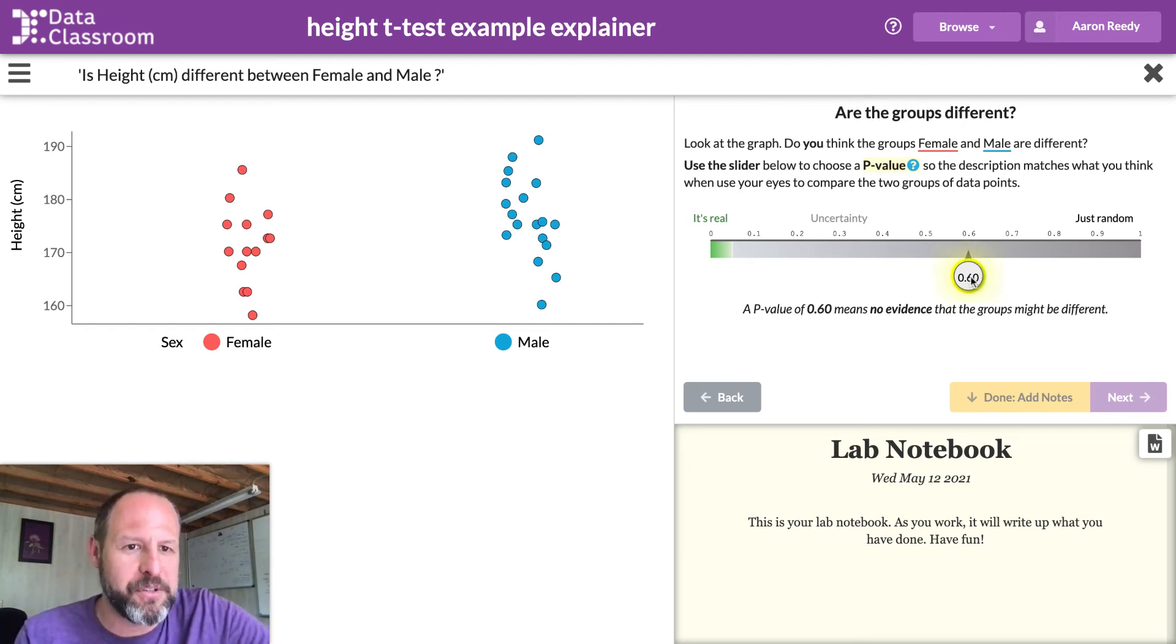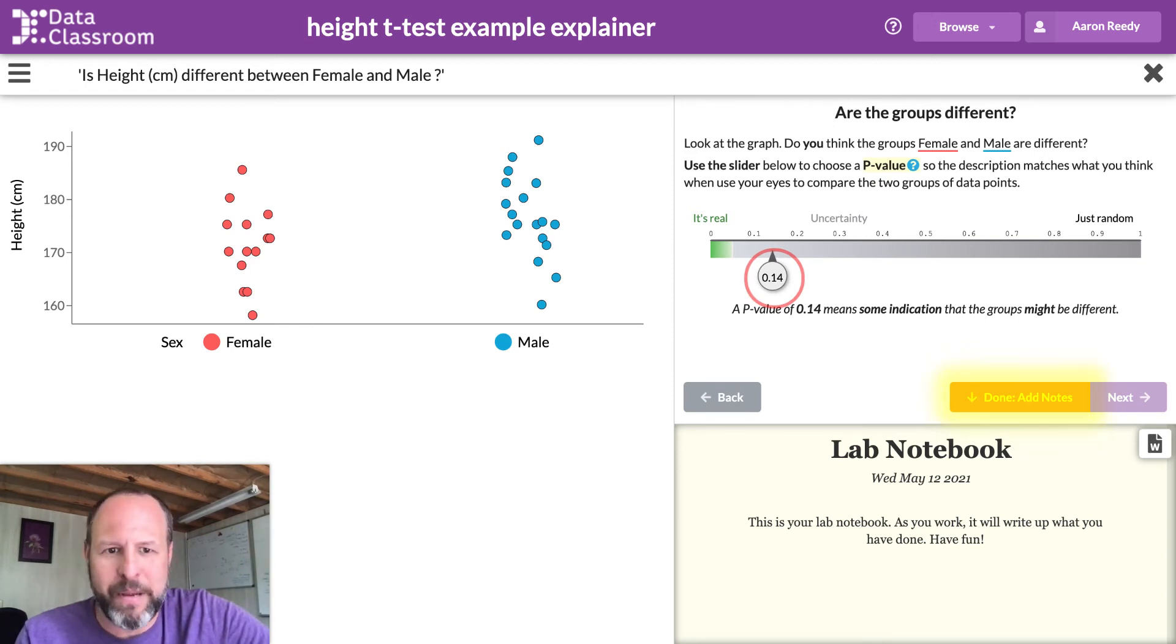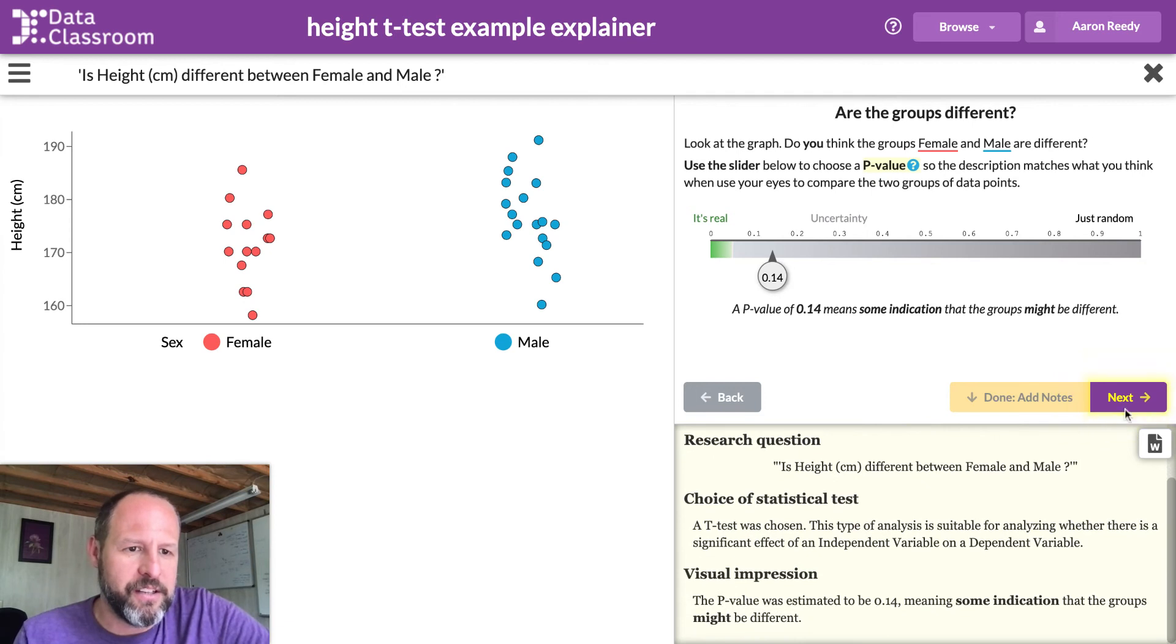So there is no right or wrong answer. I'm just grabbing this slider. Are the groups different? And I just move this along until this caption matches what my eyes are telling me. And when I look at these females and males and I'm comparing height, I don't know. Maybe I place it right here. 0.14 means some indication the groups might be different. What I'm doing is I'm estimating the p-value. I don't need to quite understand how this works to do this. But you're just logging your visual impression. Kids are going to get much better at this as they go along. And students of any age are going to start learning these estimation skills. I click Done, Add Notes. It logs it into the notebook. And I click Next.